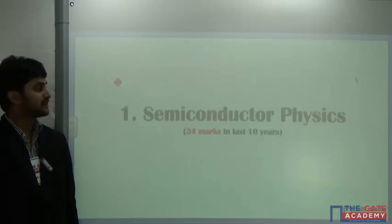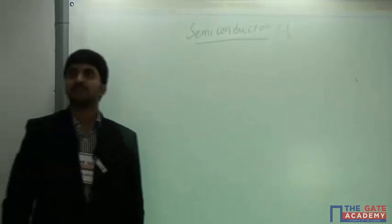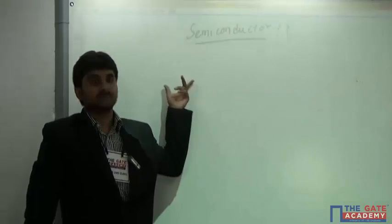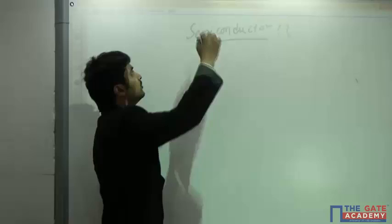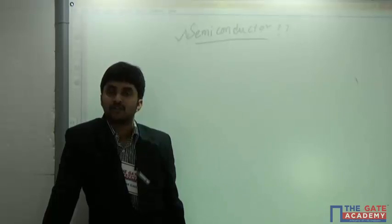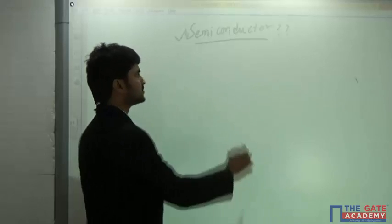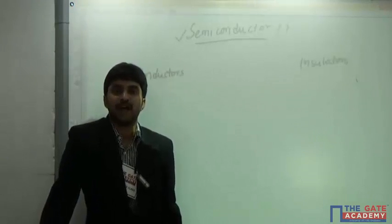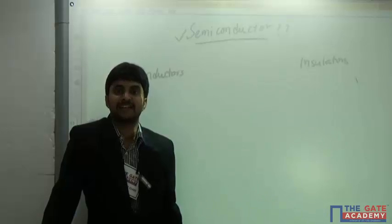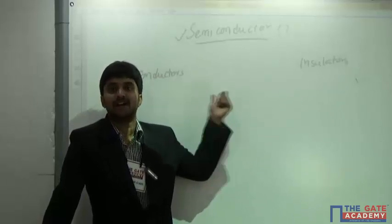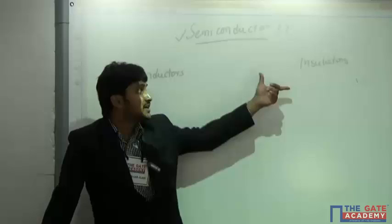We'll start with the first chapter: Semiconductor Physics. Whatever electronic devices we have, the material used for fabrication is nothing but a semiconductor. A semiconductor is defined as a material whose electrical conductivity lies in between that of metals (conductors) and insulators.